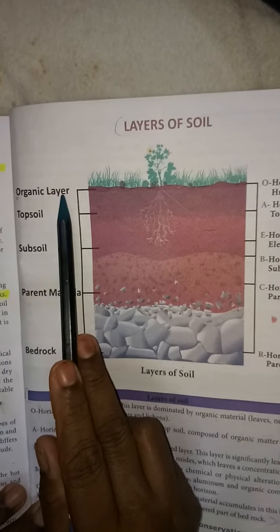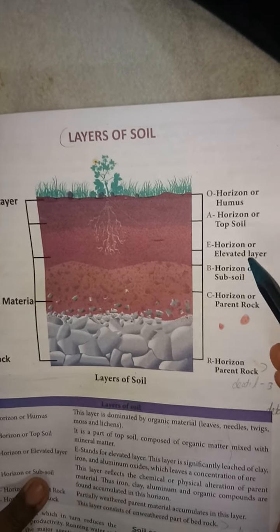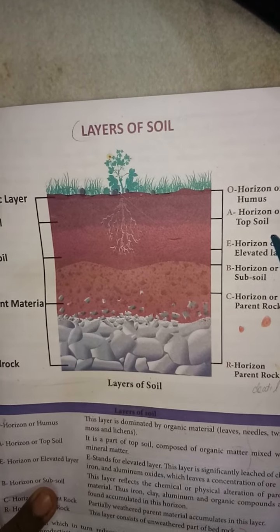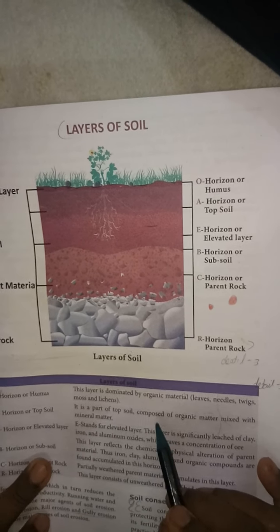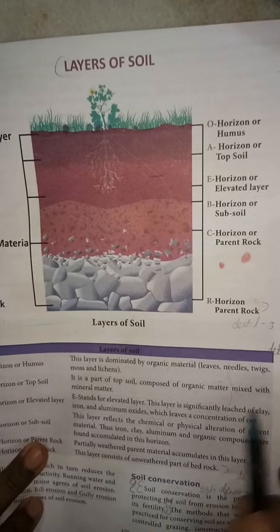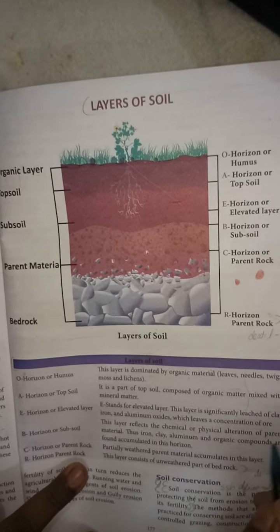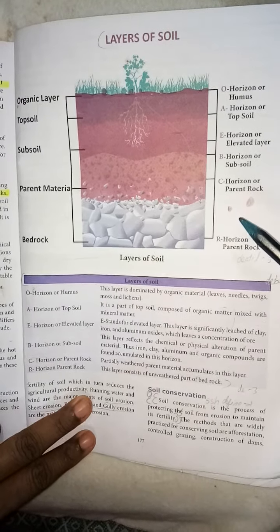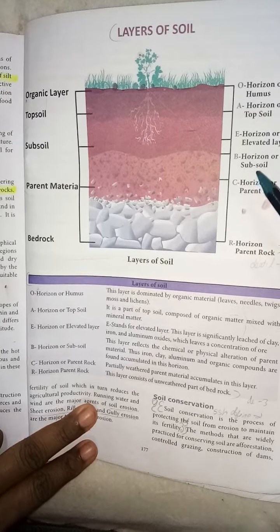Organic layer: this is the topmost layer and consists of organic material — leaves, needles, twigs, moss and lichens. This layer is dominated by organic material and humus. Topsoil is composed of organic matter mixed with mineral matter. Subsoil is also composed of leached clay, iron and aluminium oxides, which leaves a concentration of ore.